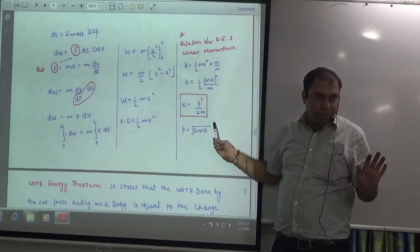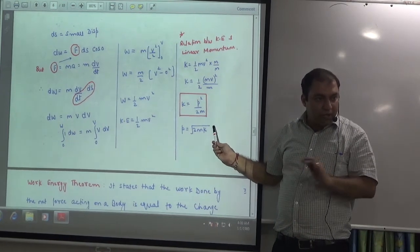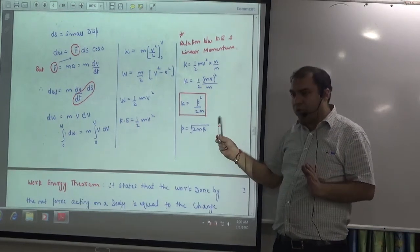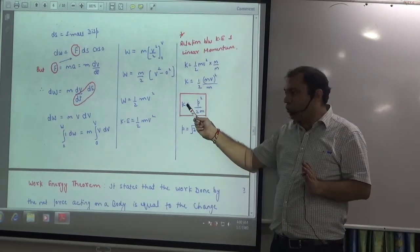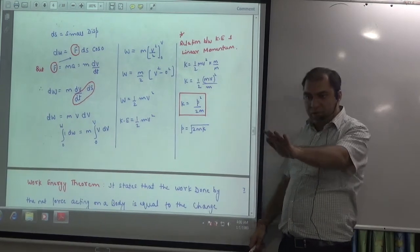Clear here? So kinetic energy and linear momentum, the relation is clear. Kinetic energy is p square by 2m. So p is equal to square root of 2mK. Okay. Is the point clear here?